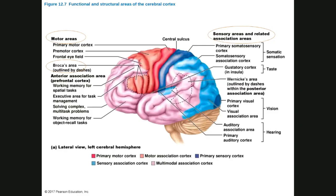The frontal lobe is responsible for intelligence functions such as memory, multitasking, behavior management, working memory, and memory expression. If a person's frontal lobe is damaged, they may behave erratically. At the central sulcus — the junction between the frontal lobe and the parietal lobe — you have the precentral gyrus (responsible for motor function) and the postcentral gyrus (responsible for sensory function).